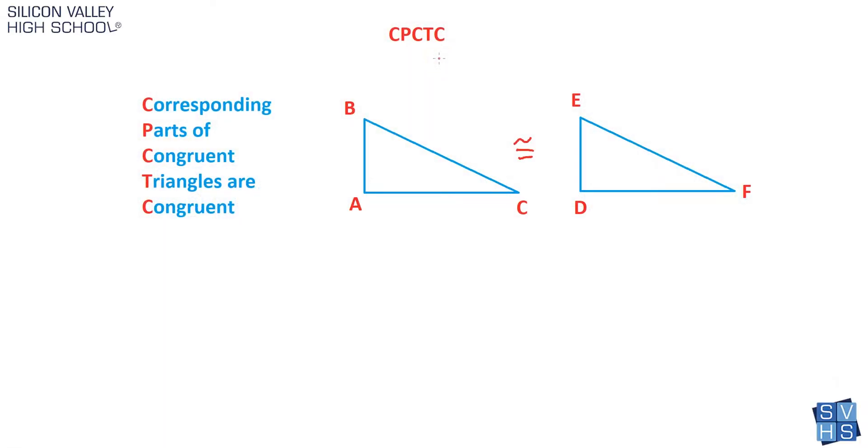CPCTC is hard to memorize, but it's used in proofs when you're proving triangles congruent. It typically shows up in a two-column proof. CPCTC stands for Corresponding Parts of Congruent Triangles are Congruent. This is really a formalization of something that's totally obvious.